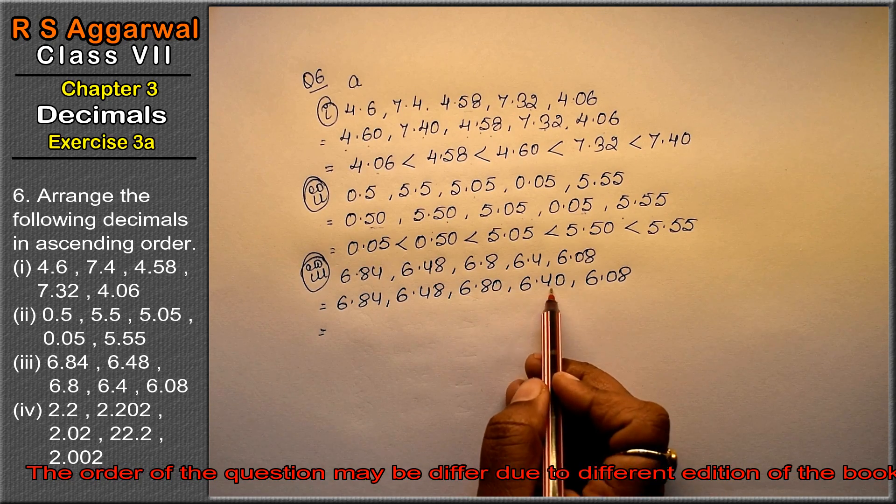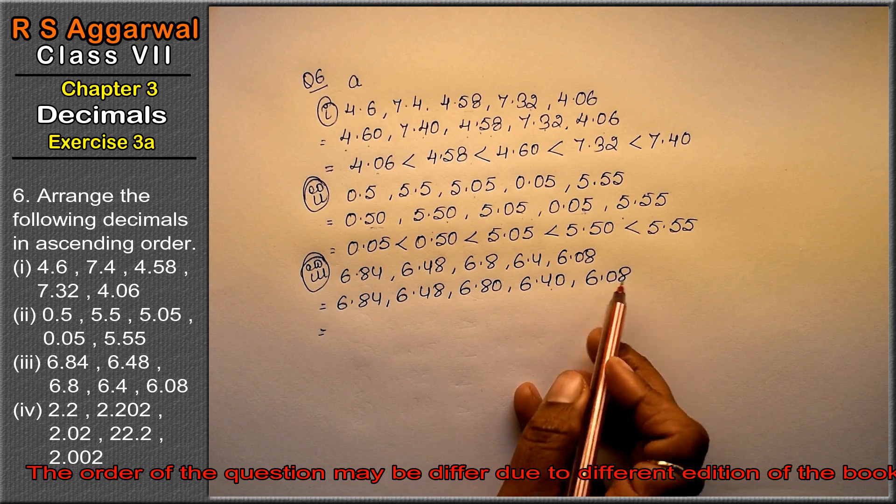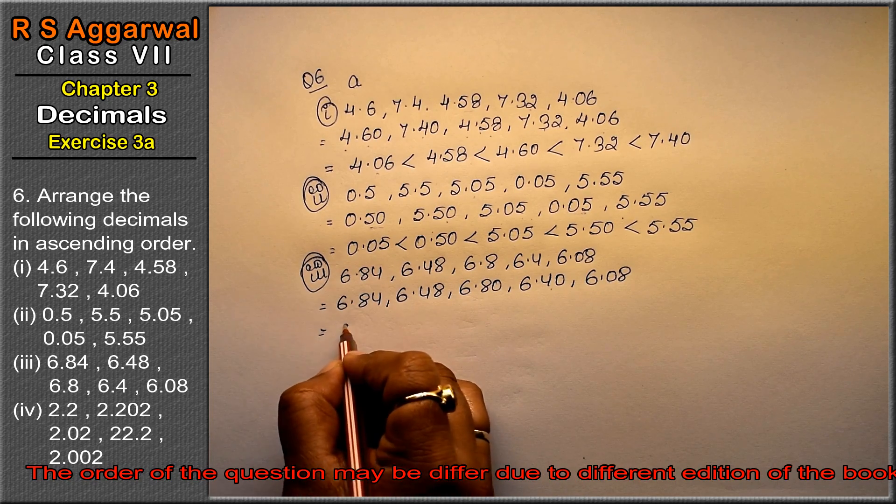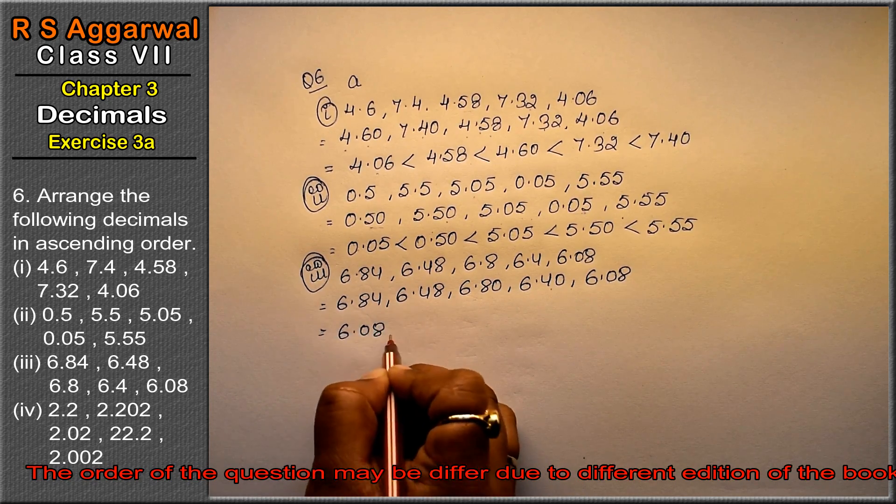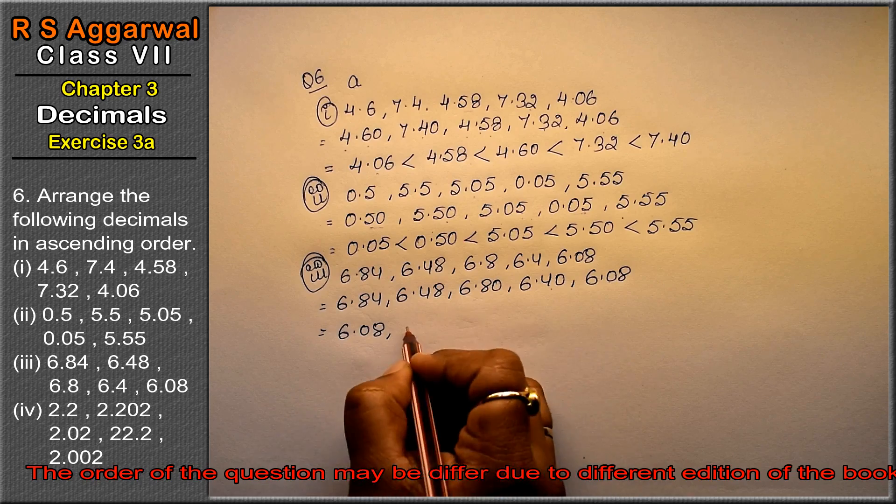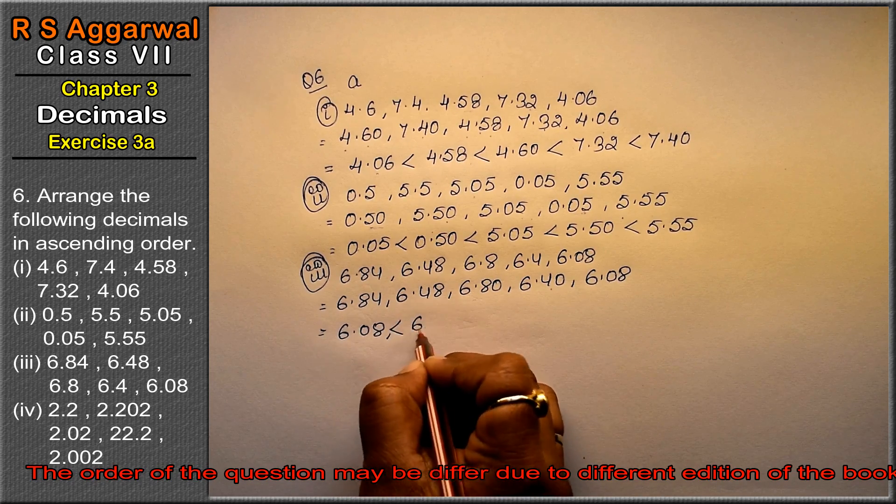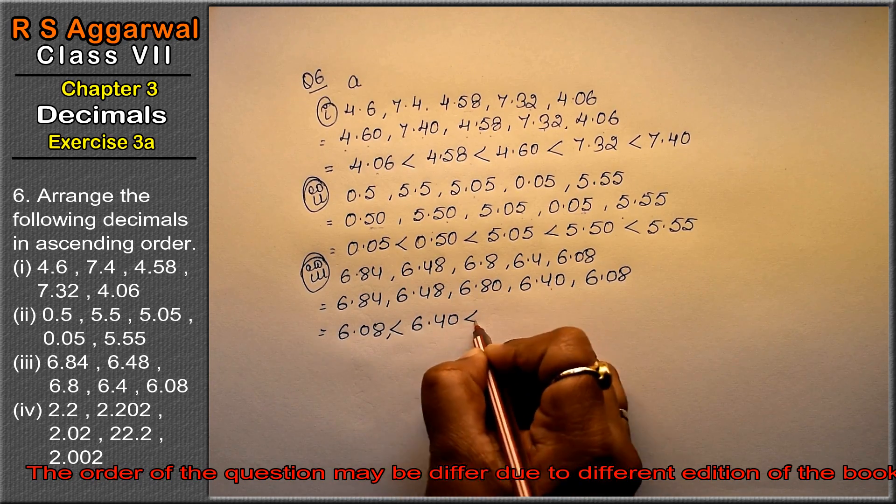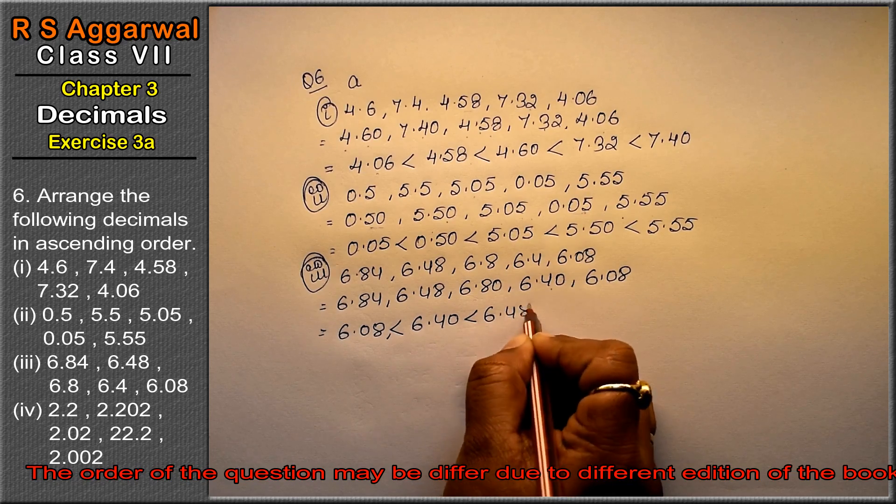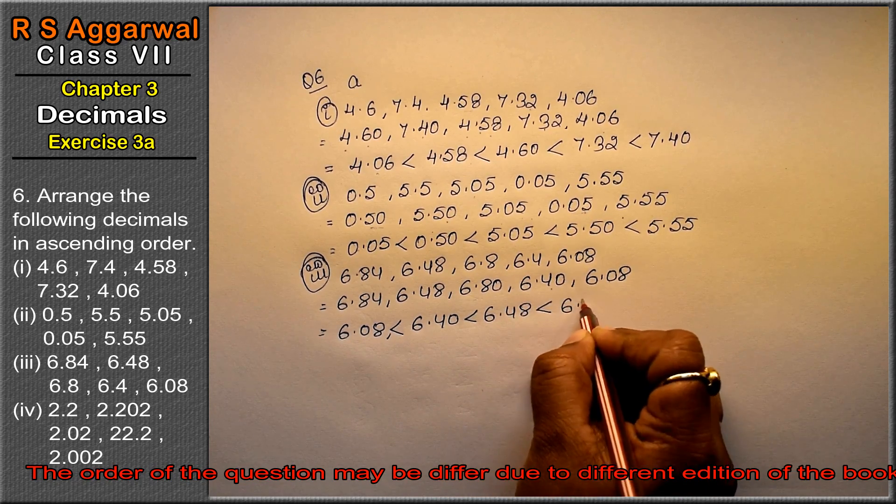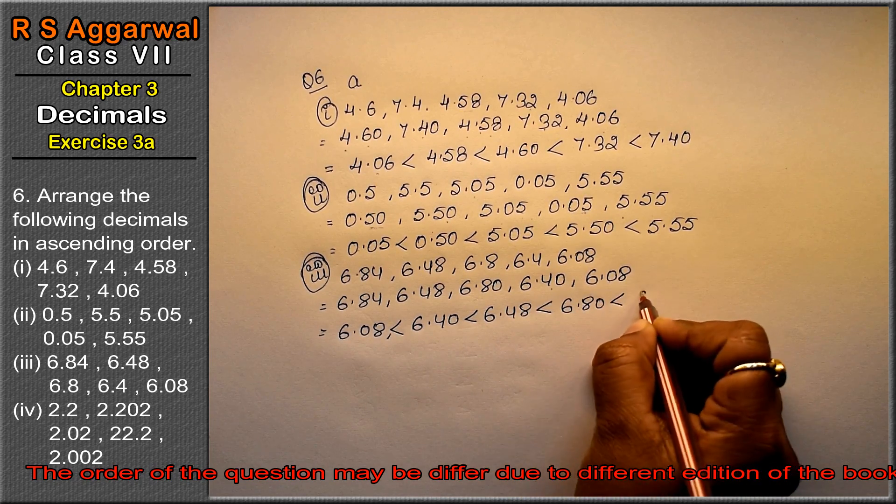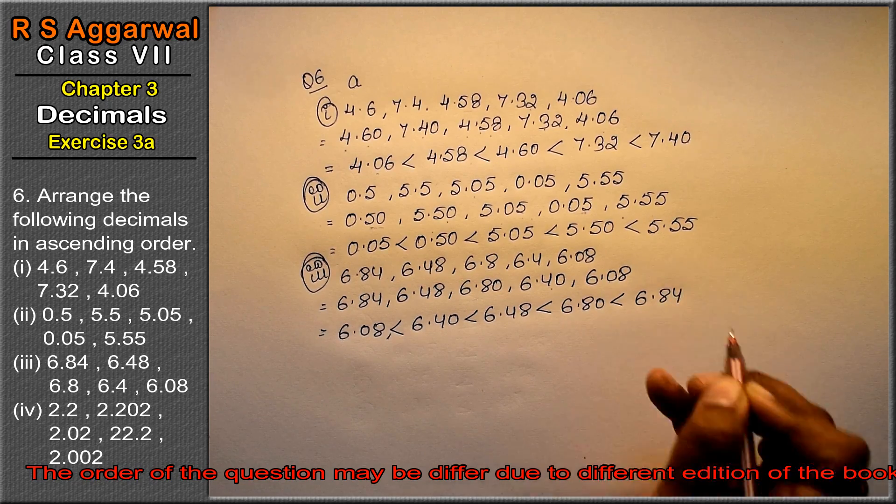What is the smallest one? 6.08. Then 6.40, then 6.48, then 6.80, and then 6.84 is the answer.